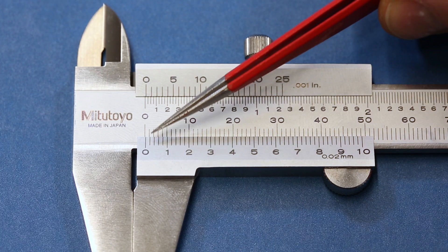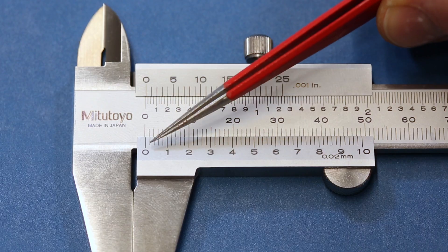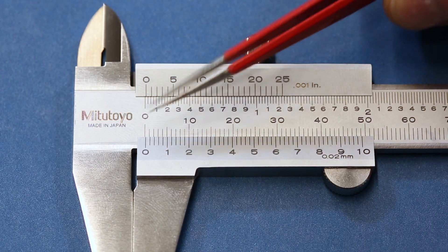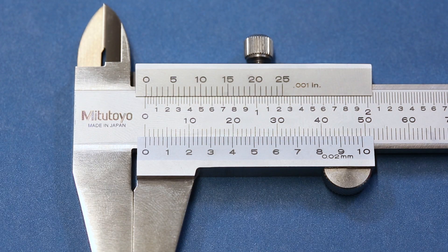If you do notice that the zeros don't line up when you close the jaws, you'll have to read the error on the calipers and add or subtract it from your measurement, or buy new calipers.